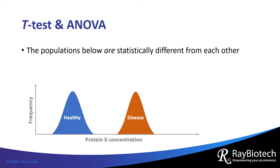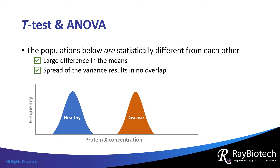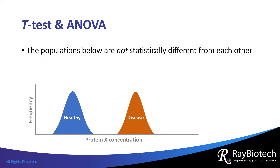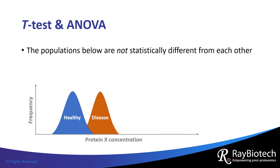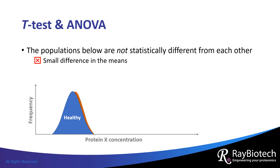In this ideal example, the populations are statistically different from each other because they have a large difference in their means and their distributions do not overlap. Here, the populations are not statistically different from each other because there is a small difference in their means and there is a high overlap in their distributions.